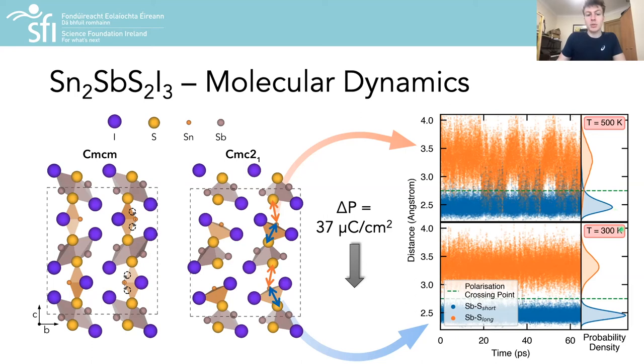So for the room temperature run at 300 Kelvin, we see a clear distinction of the short and long antimony-sulfur bonds with no bond switching, i.e. a short antimony-sulfur bond becoming a long bond, corresponding to no spontaneous switching of the polarization direction. On the other hand for 500 Kelvin we witness frequent switching of the short and long antimony-sulfur bonds, resulting in significant overlap of the probability densities. And so we see that this material is essentially approaching a phase transition to the higher symmetry CMCM structure, at which point the probability densities will merge and the antimony-sulfur bond lengths will become equivalent. So overall these results demonstrate the stability of lattice polarization in this material at room temperature and that this behavior begins to break down at elevated temperatures as expected.